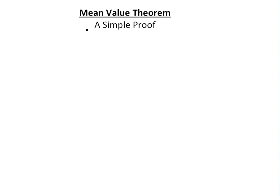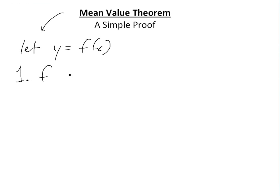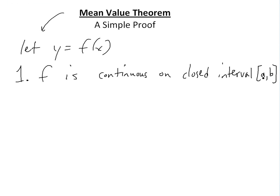Hi, it's time for math easy skills. We're going to discuss the mean value theorem and look at a simple proof — basically illustrate what it is. Let's start off with the definition of it. Let's say you have a function y equals f of x, and the following conditions are true. Condition one: f is continuous on the closed interval a and b. Closed interval just means you have to include a and b.